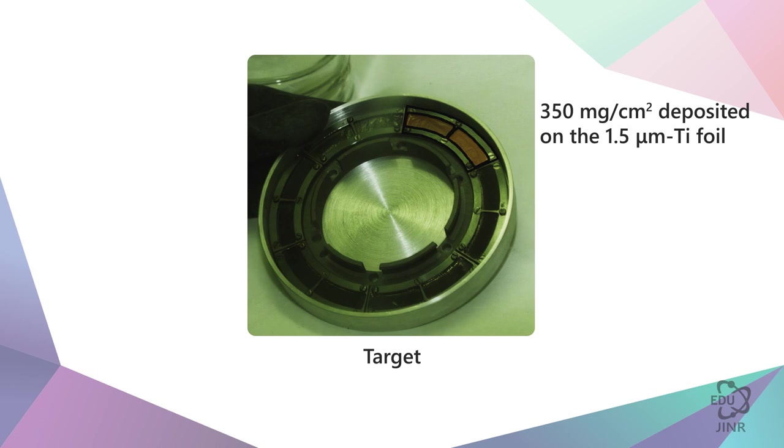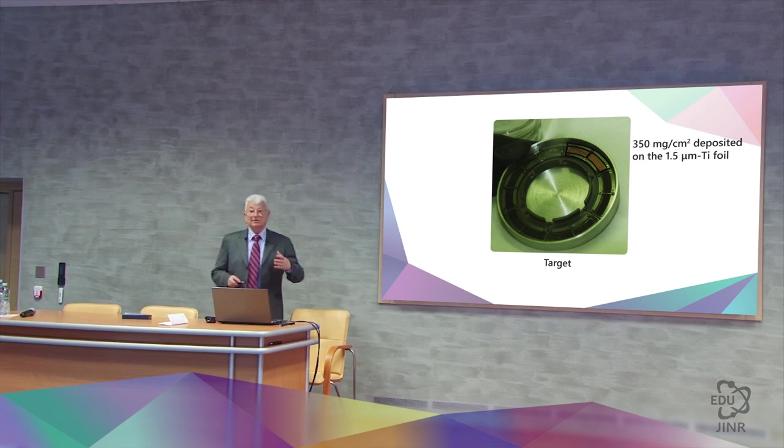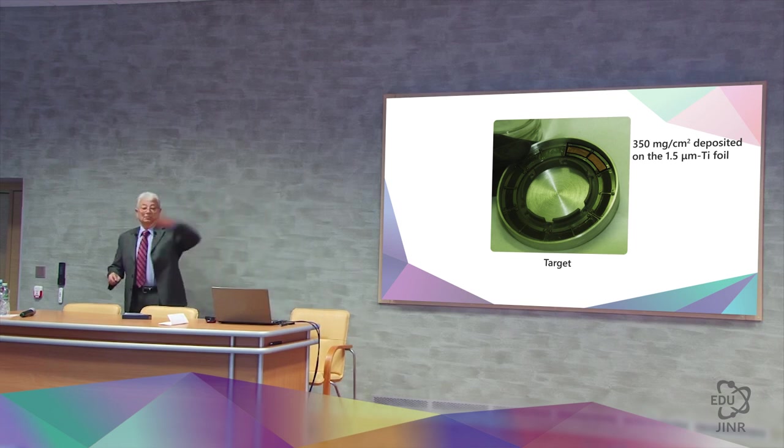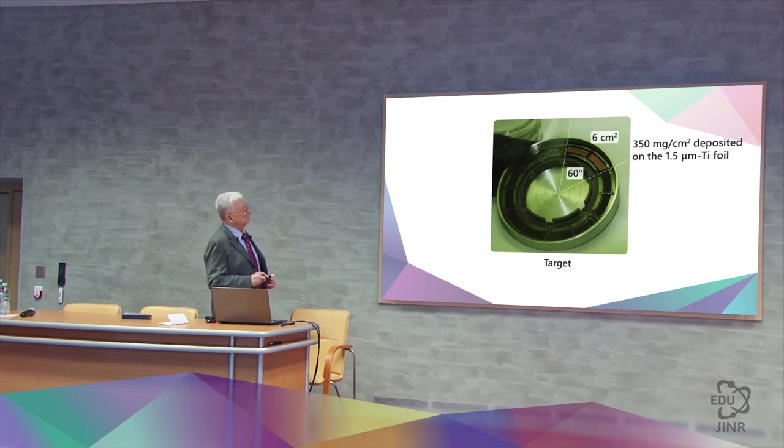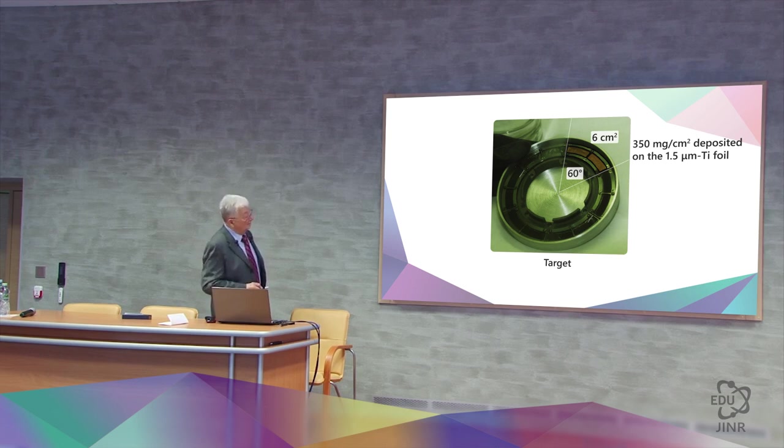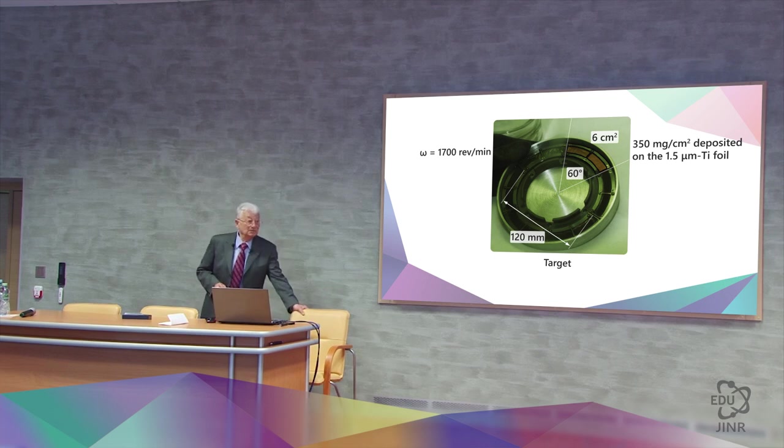Apply one and a half microns of titanium to the same thin foil in the form of a wheel, essentially creating a ring that will rotate at high speed in order to spread a powerful beam over the entire surface. This is actually done in the form of sectors. Each sector has an area of six square centimeters. Six such sectors equals 36 square centimeters with a wheel diameter of 120 millimeters at 1,700 rotations per minute. This is the target that must be irradiated with calcium-48 for a very long time.